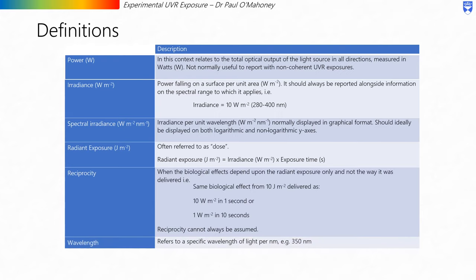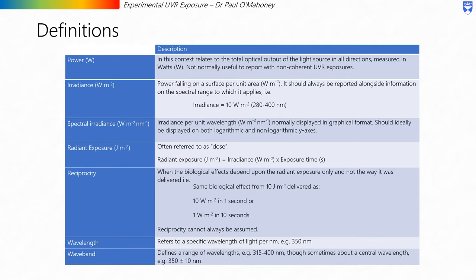Wavelength refers to a specific wavelength of light per nanometer, for example 350 nanometers. And waveband defines a range of wavelengths, for example 315 to 400 nanometers, though sometimes defined about a central wavelength, for example 350 plus or minus 10 nanometers, with the plus or minus 10 nanometers referring to the full width half maximum of the light source output.